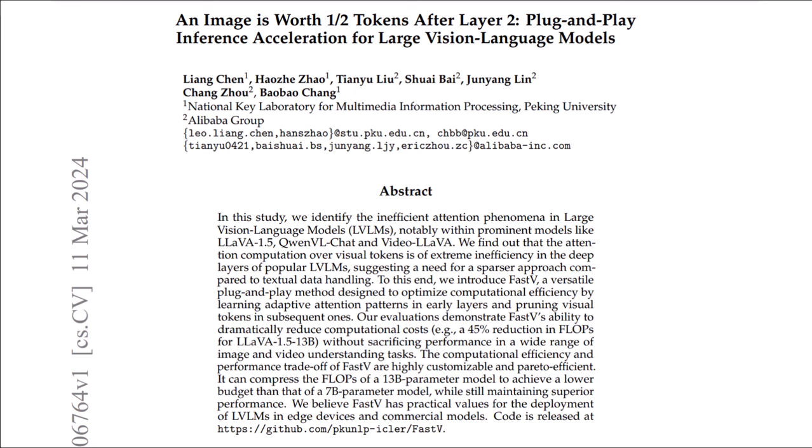In this video I'd like to talk about the paper called 'An Image is Worth Half Tokens After Layer 2.' They show that in large vision language models, half of the tokens are redundant, so we can compress the FLOPs of a 13 billion parameter model to achieve a lower budget — that of a 7 billion parameter model — while still maintaining superior performance.